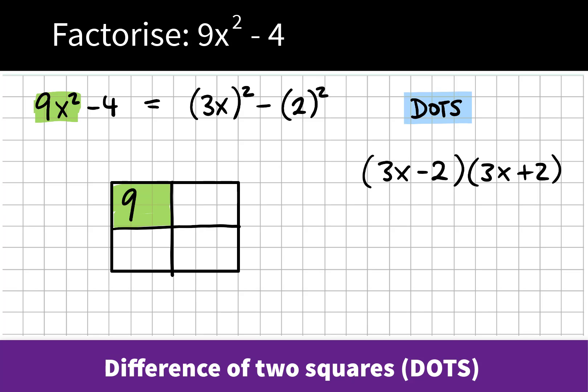If we place the 9x squared in the first part of this grid here, the first set box, and in the opposite corner we place the constant term, the negative 4, just like we do for any other quadratic expression.